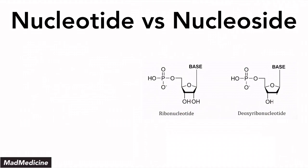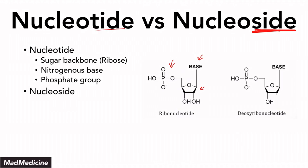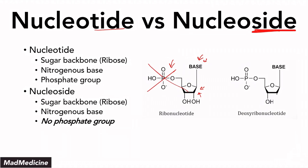You need to understand the difference between a nucleotide and a nucleoside — this is very important because you can get tested on it. A nucleotide has all three components: a sugar backbone, a nitrogenous base, and a phosphate group. A nucleoside has a sugar backbone and a nitrogenous base, but does not have a phosphate group. When you add a phosphate group to a nucleoside, you get a nucleotide — that's how to remember it.